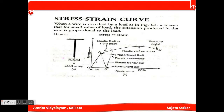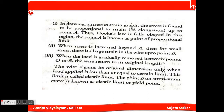In this region the wire shows elastic behavior, and beyond that it shows plastic behavior. This region is the permanent set. According to the law, stress is proportional to strain. In this graph, stress is found to be proportional to strain up to point A.